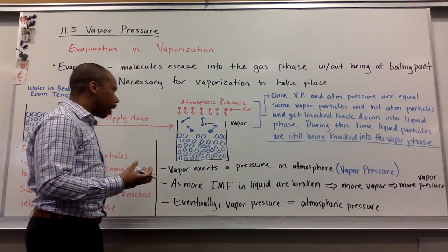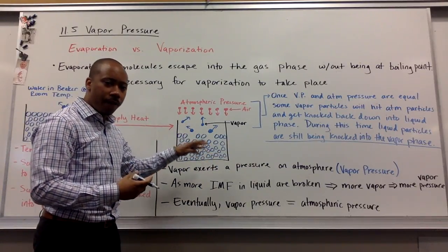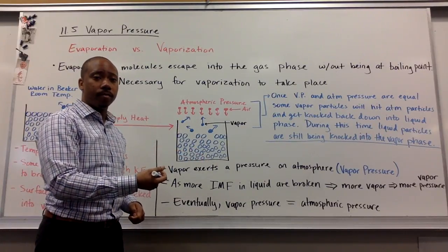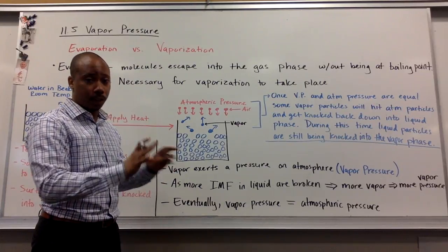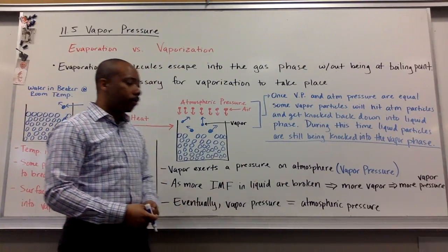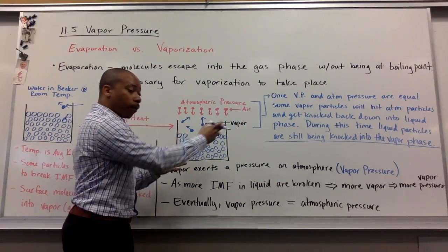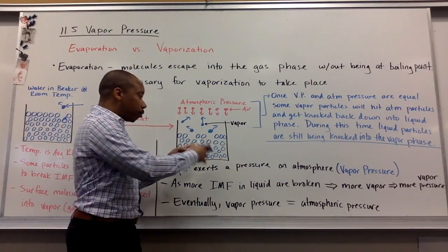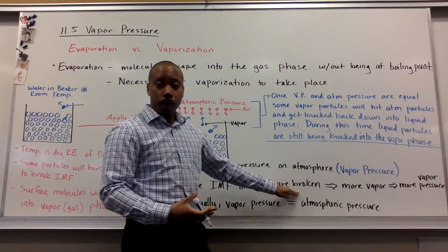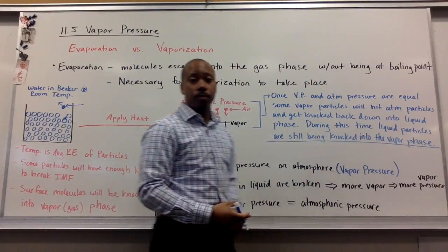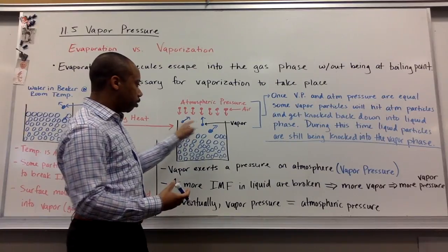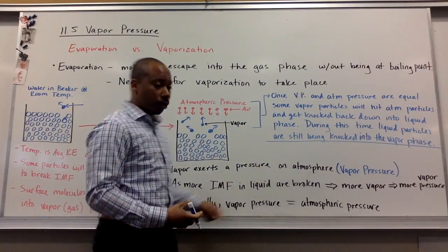Now let's say I apply heat. Evaporation has already happened naturally with the water standing at room temperature. Now I turn the heat on and start to heat the water up. As more intermolecular forces in the liquid are broken, you get more vapor, because the particles move around faster and knock each other out of the liquid phase at a more rapid rate. So as more intermolecular forces are broken, I get more vapor and therefore more vapor pressure. Eventually I'll get enough vapor pressure that it will equal the atmospheric pressure.